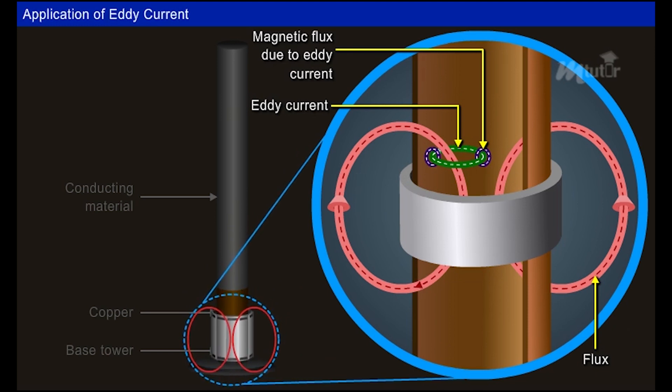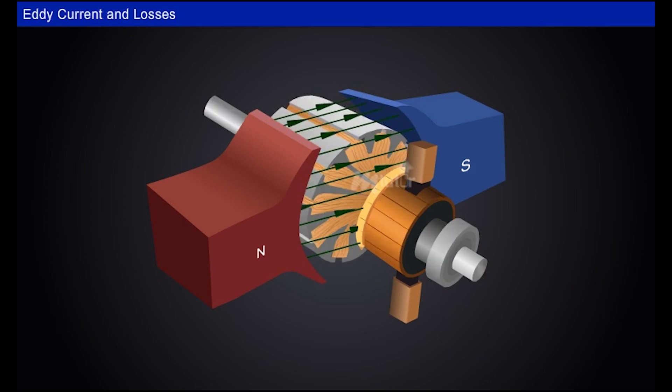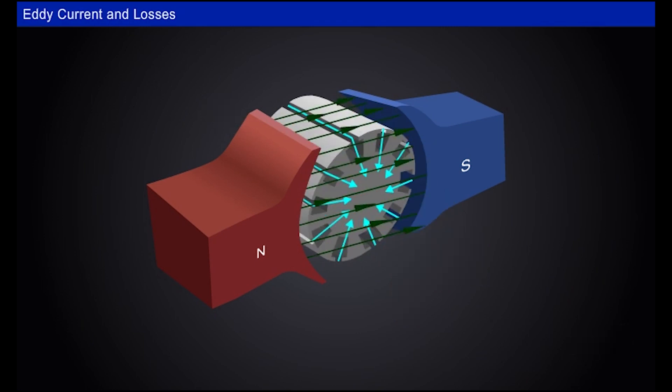Similarly, eddy currents are present in rotating electrical machines. As the rotor rotates in the magnetic field, it cuts the magnetic flux and EMF will be induced in the armature conductors. In the same way, the armature core also cuts the flux and EMF is induced in the core.